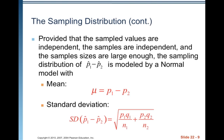Provided that the sampled values are independent, the samples are independent, and the sample sizes are large enough, the sampling distribution of P hat 1 minus P hat 2 is modeled by a normal model with mean mu equaling P1 minus P2, and the standard deviation is exactly as we described it before.